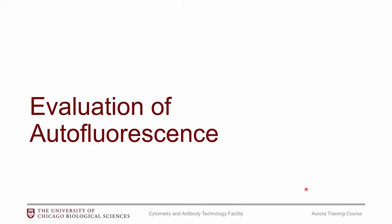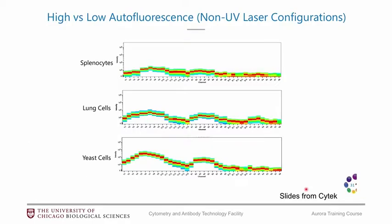One of the cool features of the Aurora is that you can extract the autofluorescence, which will improve your data. Here are some examples of autofluorescence using unstained cells run on the instrument. Splenocytes don't have a lot of autofluorescence, lung cells have a fair amount, and yeast cells have a pretty high amount. With the autofluorescence extraction, it will utilize this signature as a unique signature and put it into an additional channel in your unmixed file labeled AF.